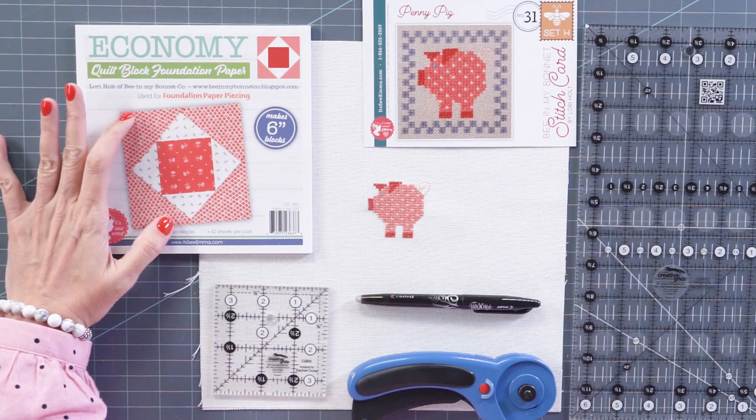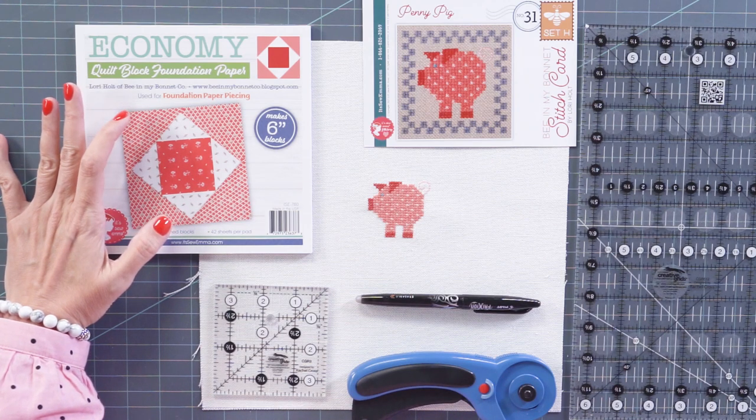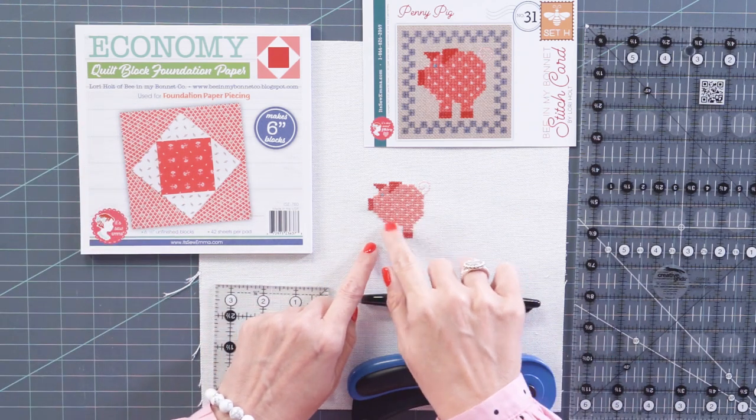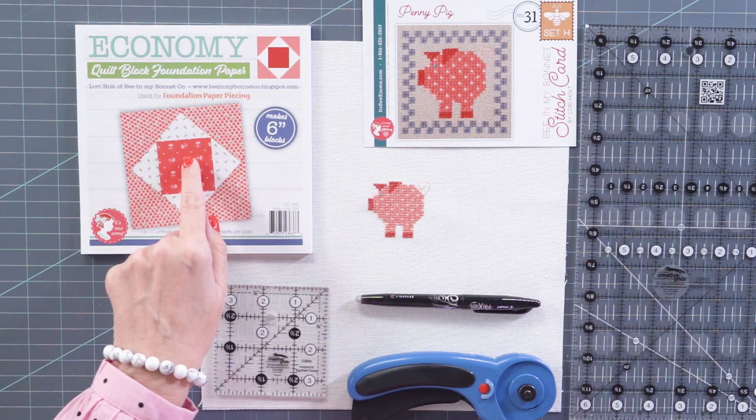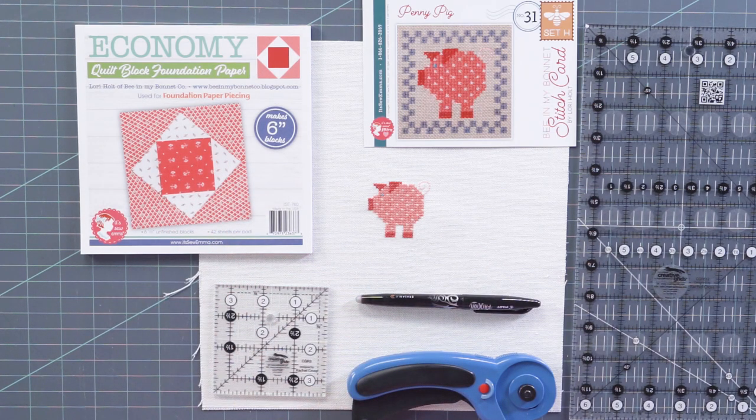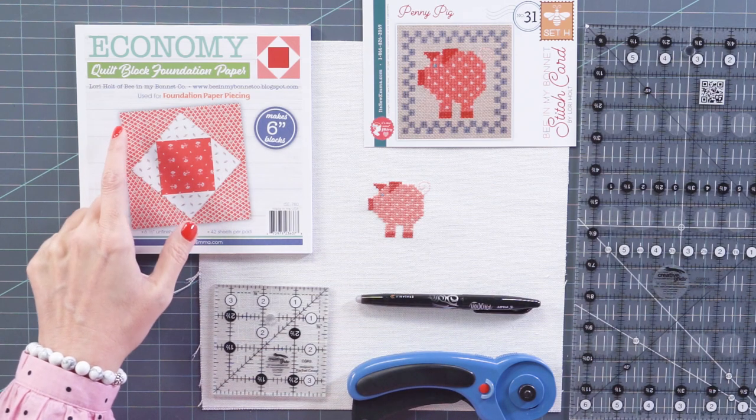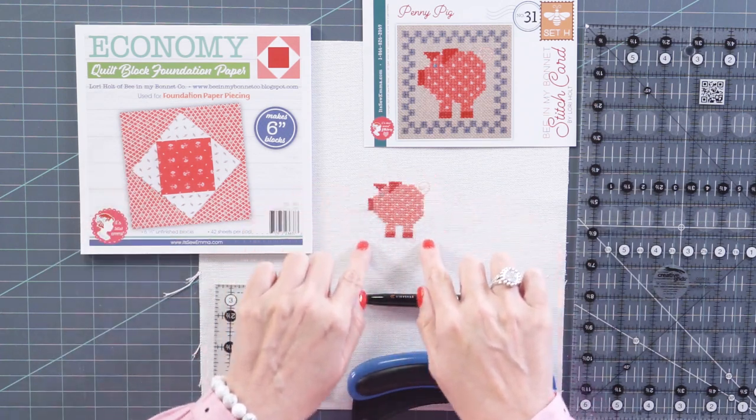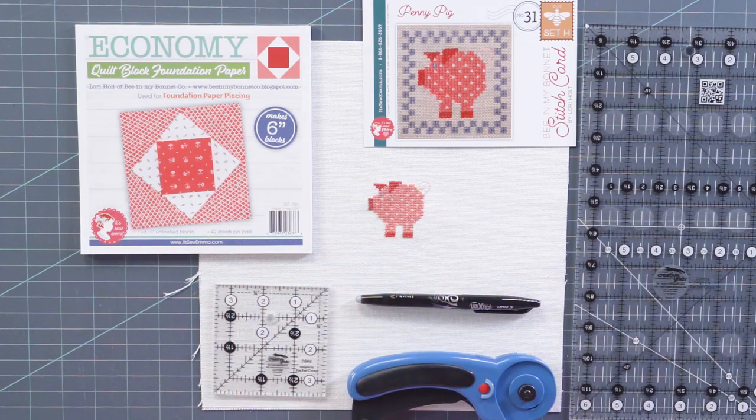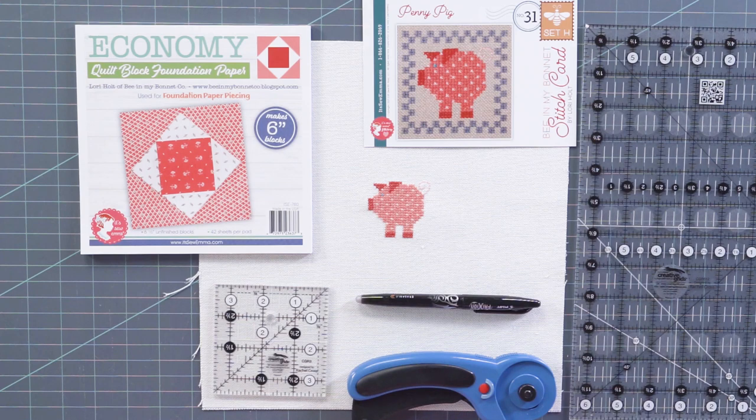For the Economy block that goes on the front of the pillow, I'm gonna show you how to center the Penny Pig in the very center. After you do that, I would like to reference these two videos to show you how to complete the entire block. First is our video, and second is Lori's video. The great thing about these videos is we both piece the Economy block a little bit differently, but we end up with the same exact result. We're using the six-inch block, and you want to leave the border off. Any of her stitch cards will work with this method.